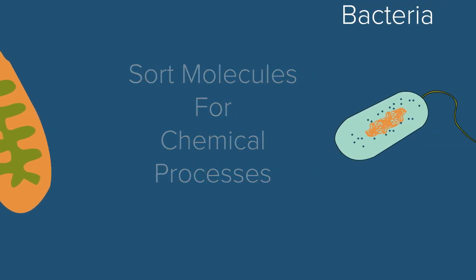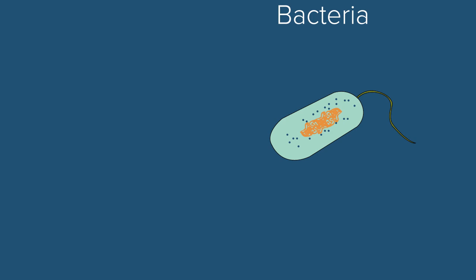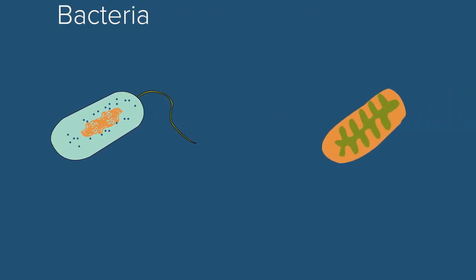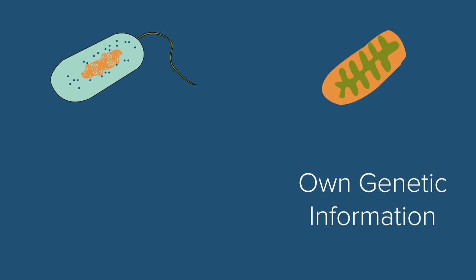Scientists think that mitochondria evolved from bacteria and used to be a separate single-celled organism. The reason for this theory is that mitochondria contain their own genetic information.